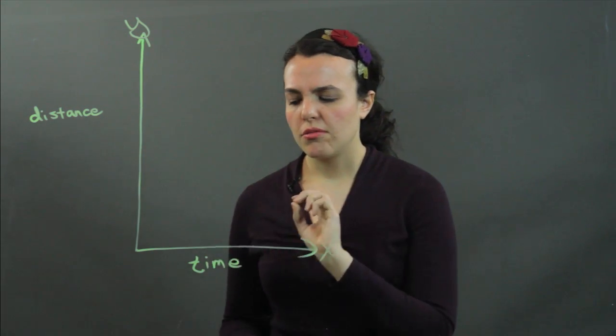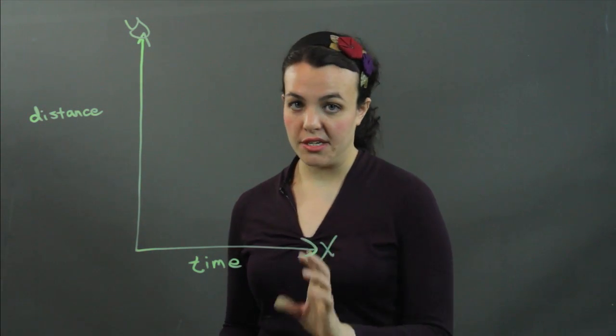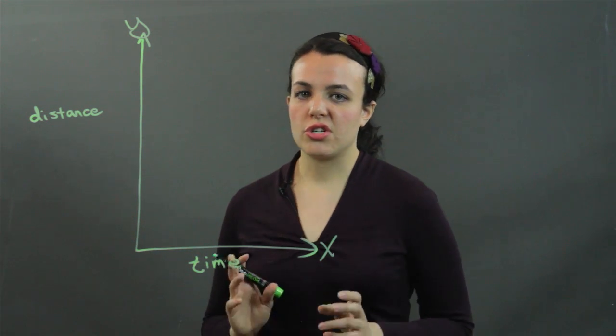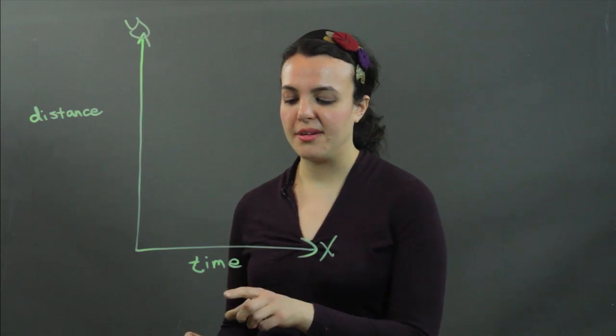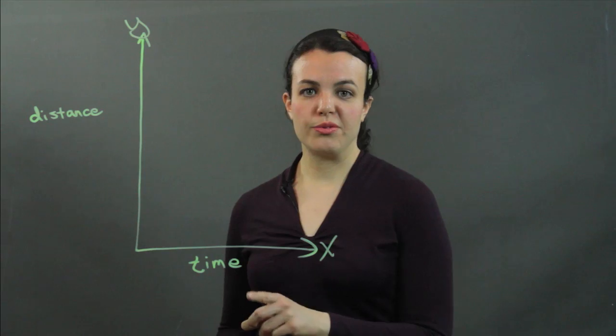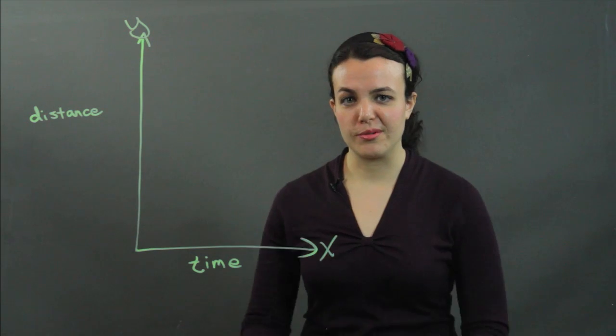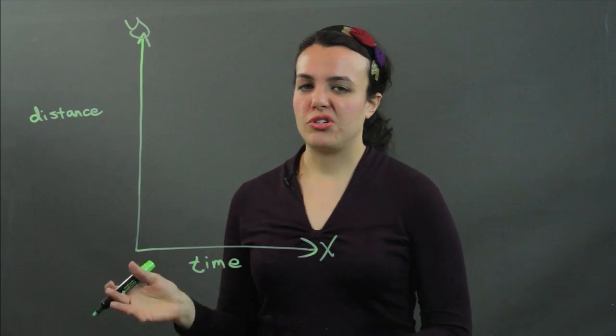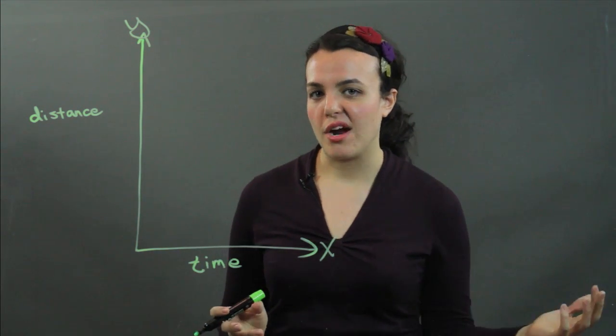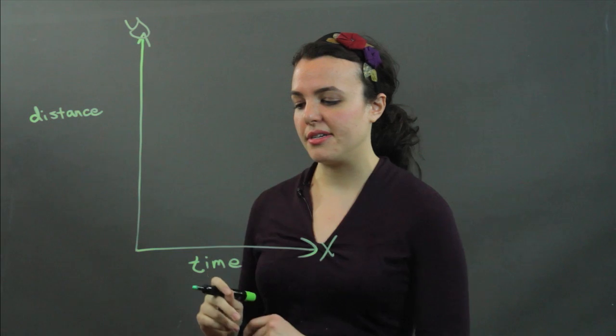Remember that x, the x variable is the independent variable. And traditionally, we always put time on the x-axis because time independently moves forward of everything, right? Time just plods forward whether we want it to or not. Whereas the distance does rely on how long something's been traveling. So distance is dependent, time is independent.